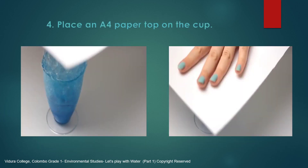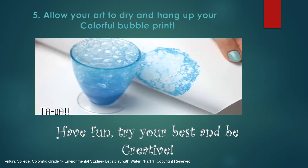Fourth step: Place an A4 paper on top of the cup. Fifth step: After you place the A4 paper on top of the cup, as you can see in the picture, the bubble paint will paste onto the paper. You can try the same steps to get different colourful bubble paintings.